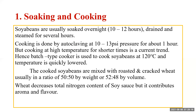Cooking is generally done by autoclaving at 10 to 13 pounds per square inch pressure for a period of about one hour, but cooking at high temperature for a shorter time is the current trend. Batch type cookers are used to cook soybeans at 120 degrees Celsius and the temperature is quickly lowered. So soybeans have to be soaked in water overnight, then drained and cooked by steaming.